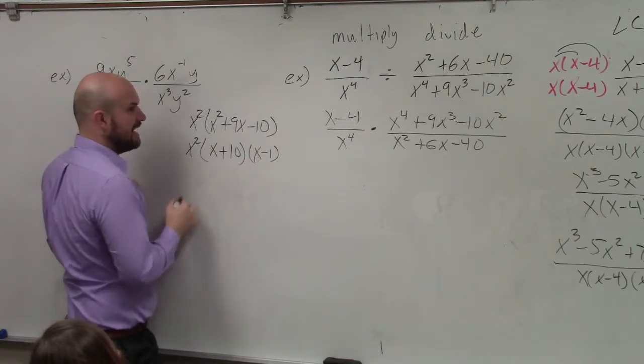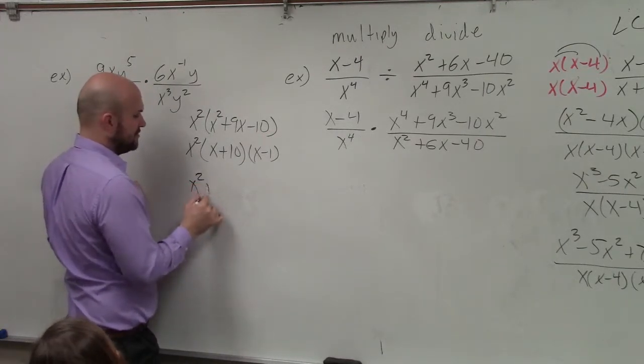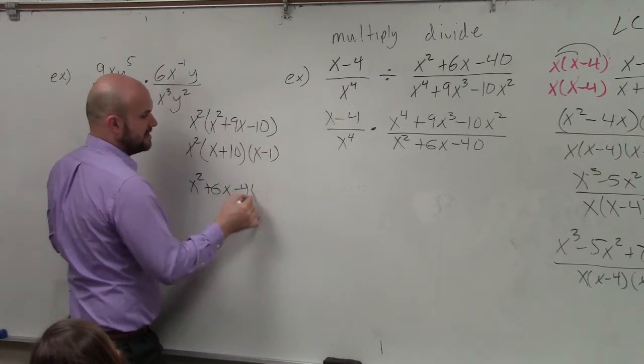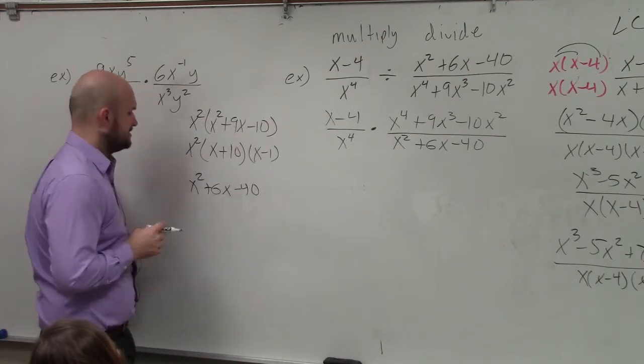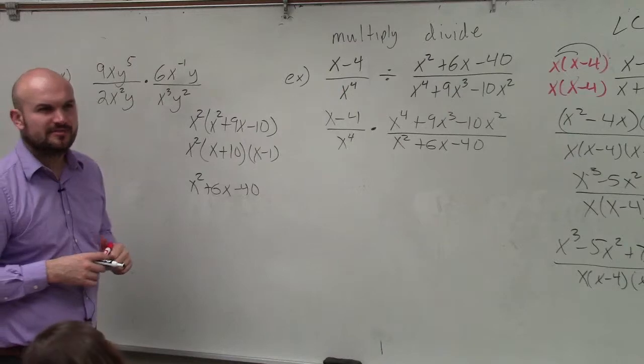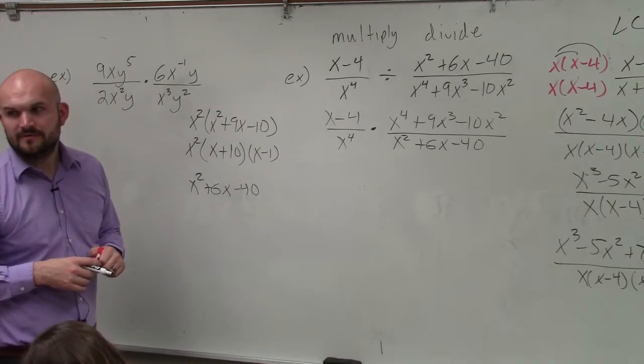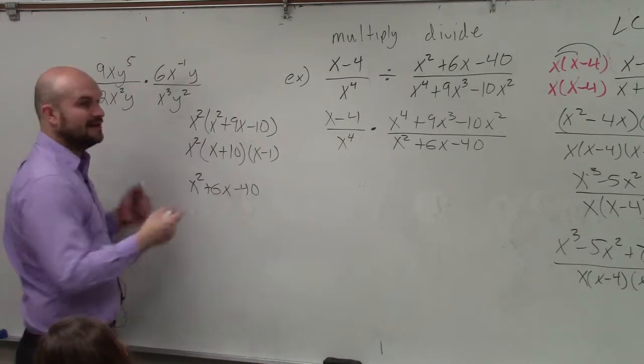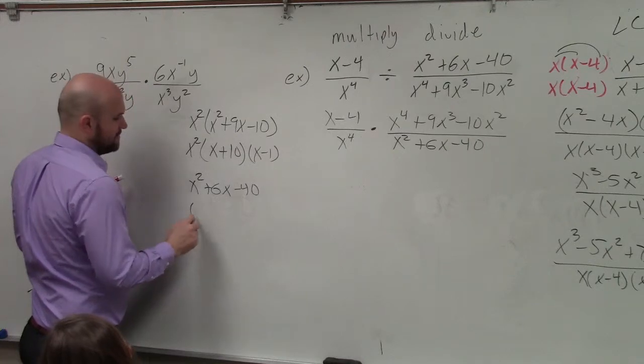OK? My denominator, I can factor to x squared plus 6x minus 40. That gets factored into, did anybody get the answer? It would be x plus 10 and x minus 4.